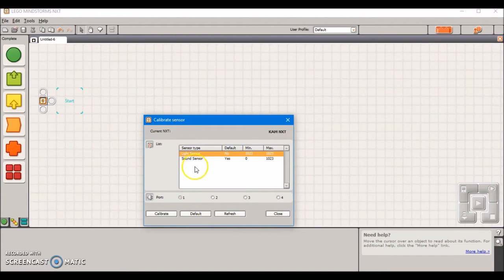Note that the only two sensors that are offered for calibration are the sound sensor and the light sensor, the only two sensors that really need to be calibrated. Today the only one I'm going over is the light sensor because you can't use a sound sensor in FLL.